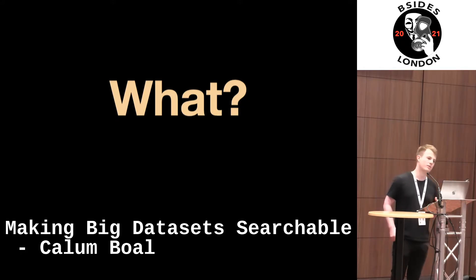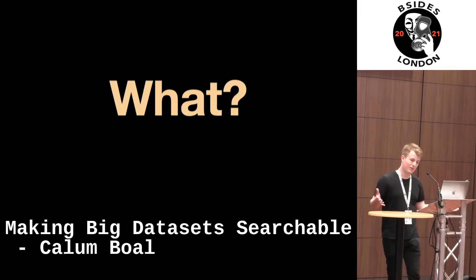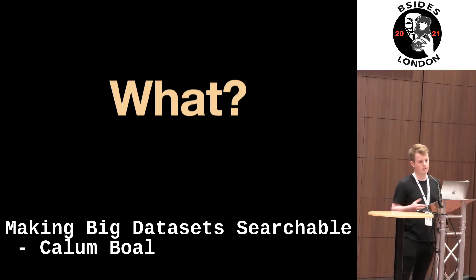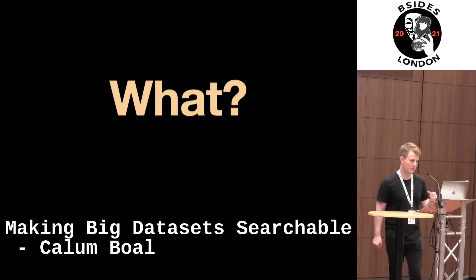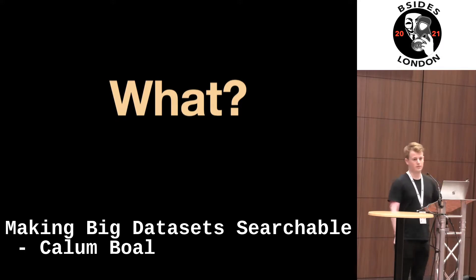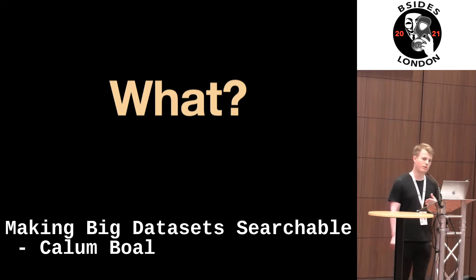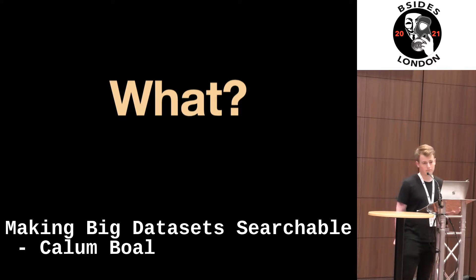If people aren't familiar with Rapid7's Project Sonar dataset, it is a massive dataset of DNS records gathered through various means — for example, scanning the internet and parsing common names out of certificates, looking at certificate transparency logs, stuff like that. It's huge — about 183 gigabytes of JSON data with 1.8 billion records in it.